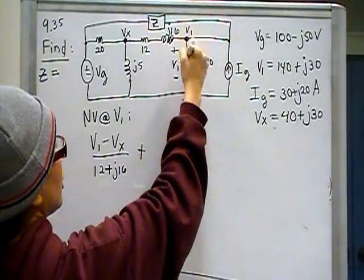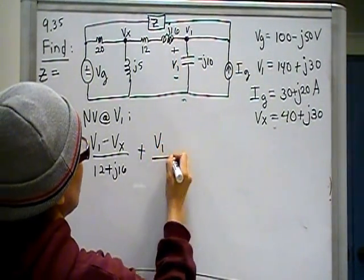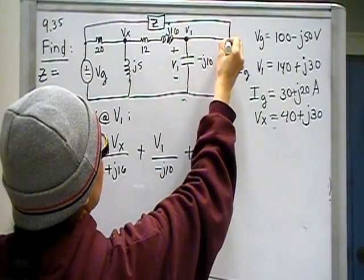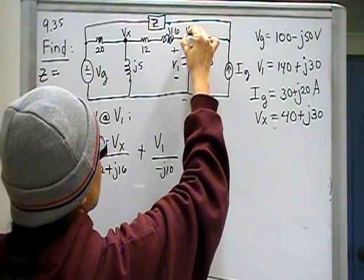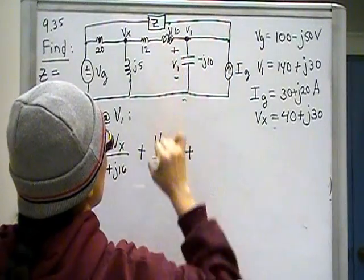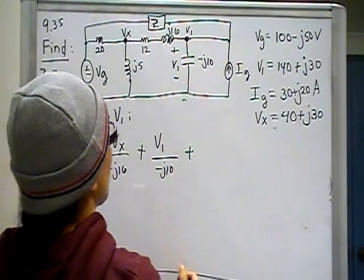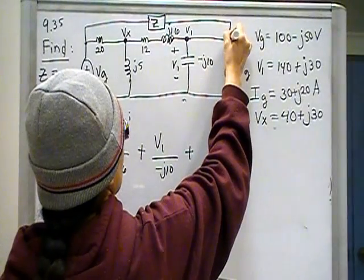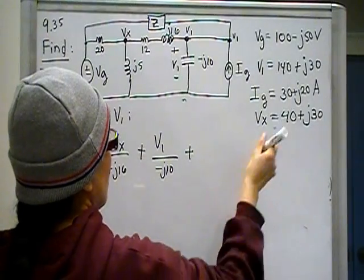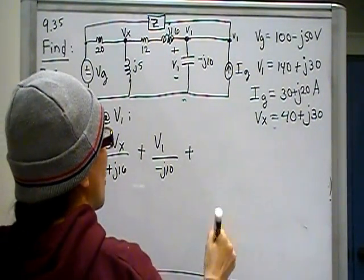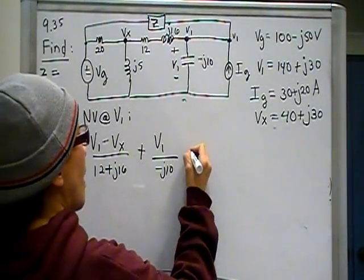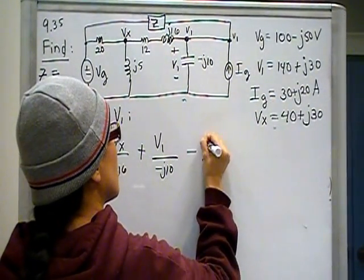So v1 minus vx over 12 plus j16, plus this current right here, v1 over negative j10. Plus, well look at this, this is just a piece of wire, right? That means this node is really this node here, because it's just electrically equivalent, just a piece of wire. A jumper between here and here. So electrically they are the same node. So this is really also v1. Here I have an ig going in there, and ig is that. And since it's going into the node, that makes it a negative number by the passive sign convention. Minus i sub g.